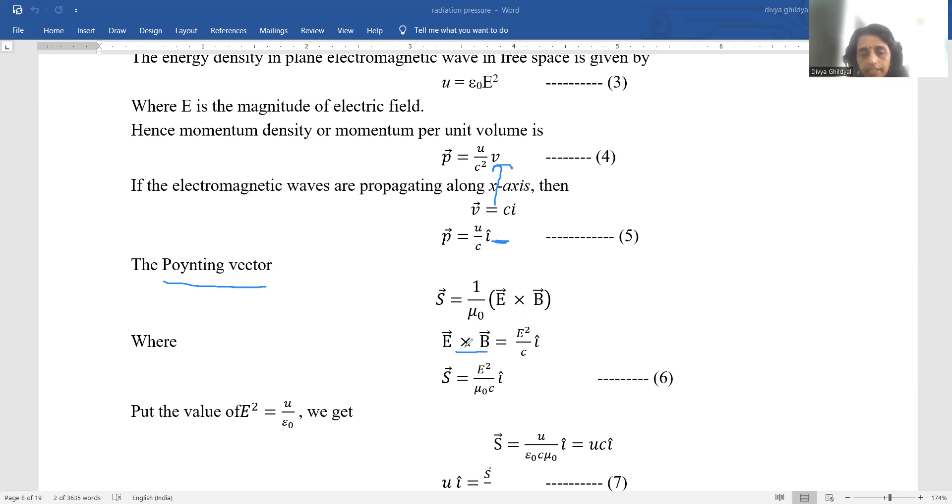Here we have put the value of b in terms of e and mu naught. So this becomes e is equal to b mu naught. So mu naught gets cancelled and you are left with e square.